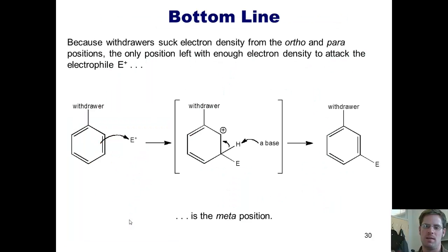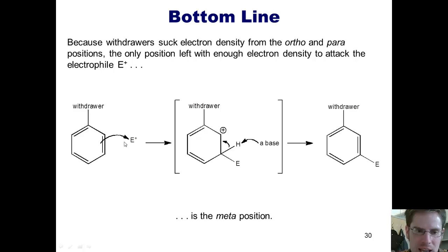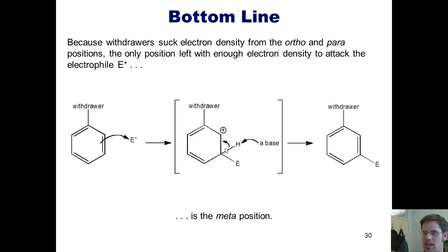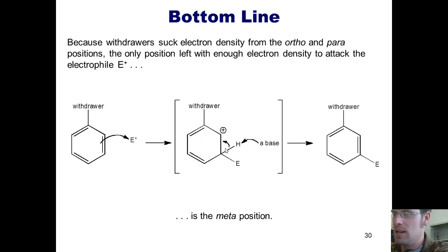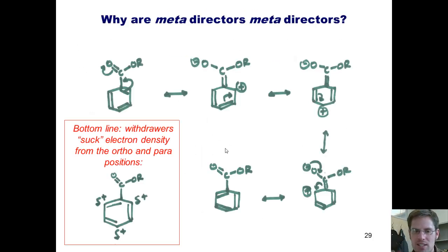Because withdrawers suck electron density from the ortho and para positions by resonance, the only position left with enough electron density to attack an E+ is the meta position. That is why withdrawing substituents are meta directors. Do I want you to be able to explain why a meta director is a meta director on an exam? The answer is yes, and you had best be able to draw all of these resonance structures to prove it.